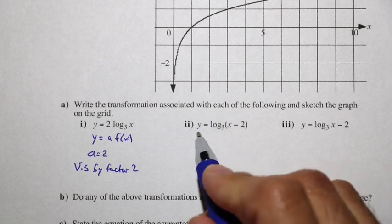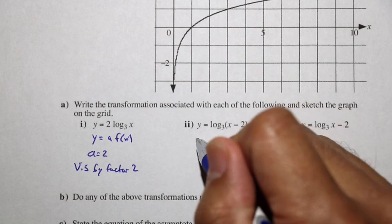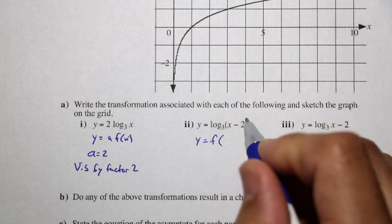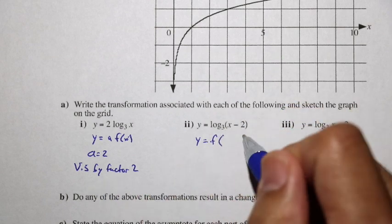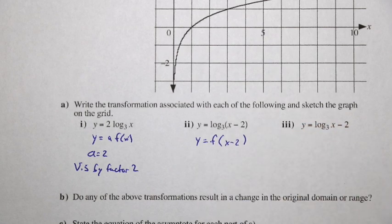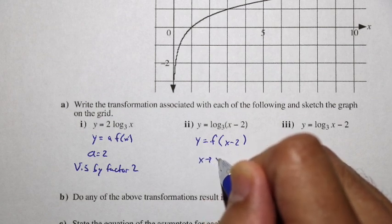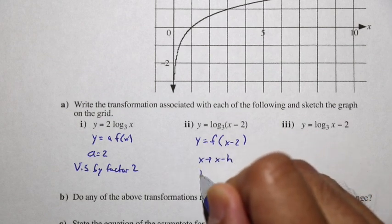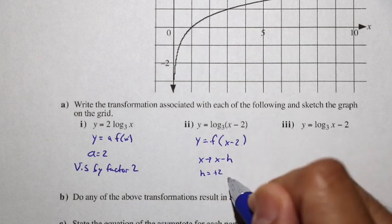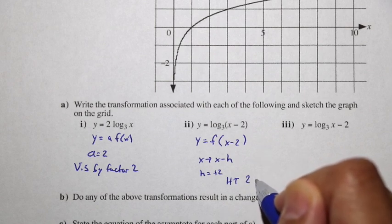Looking at part 2, we have y equals log base 3 of x minus 2. Here the original f of x is y equals log base 3 of x, but instead of x we use x minus 2. This is like x being replaced with x minus h where h equals positive 2, which corresponds to a horizontal translation of 2 units to the right.